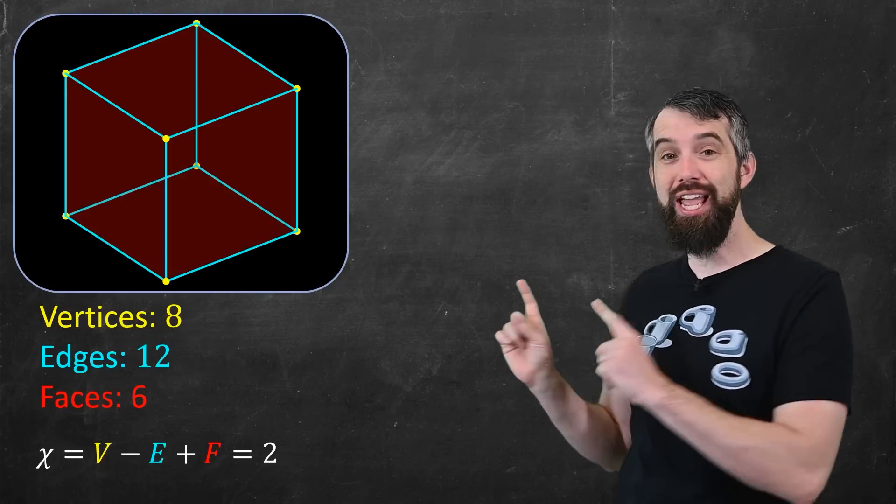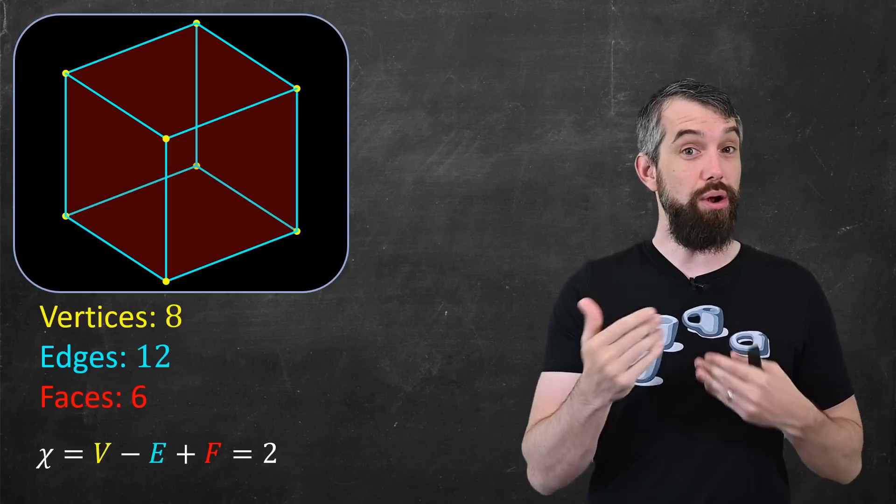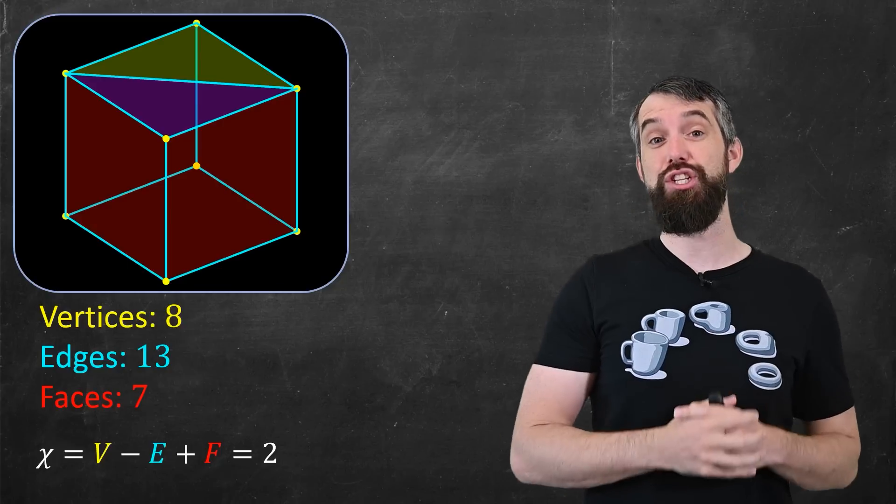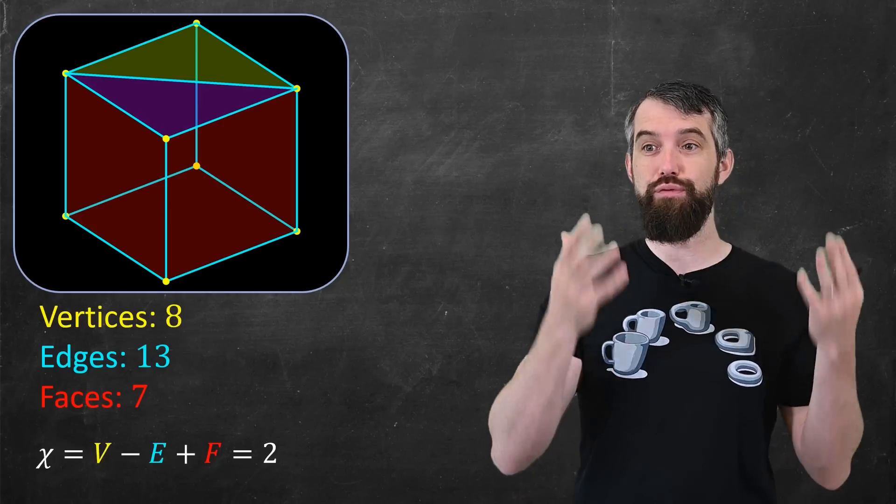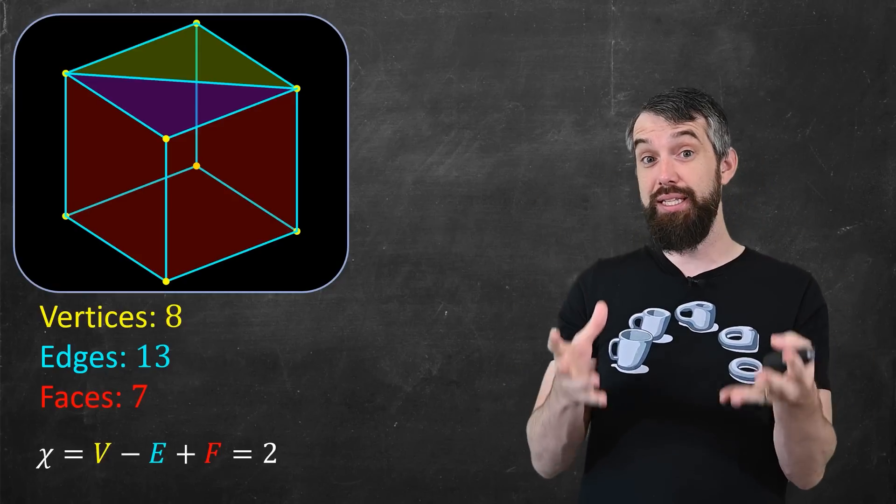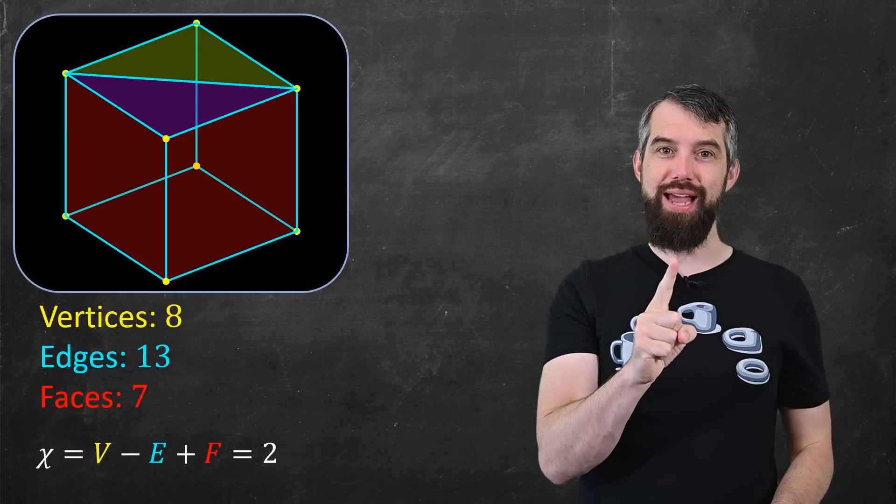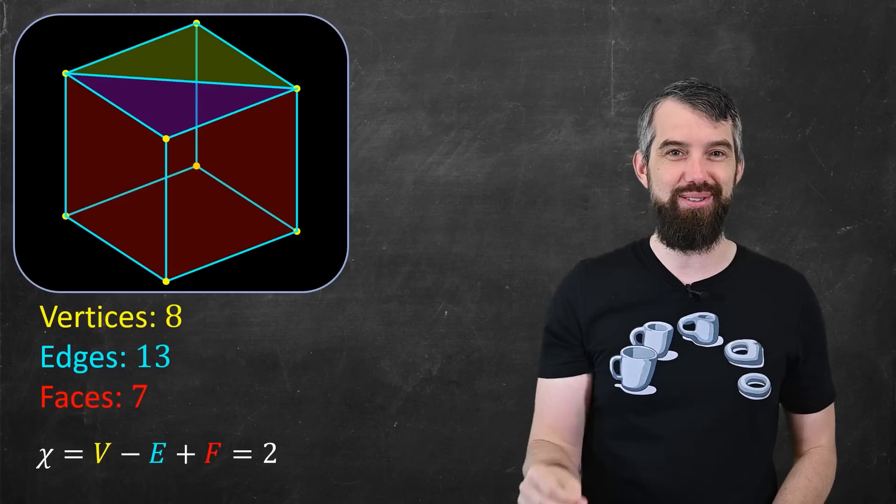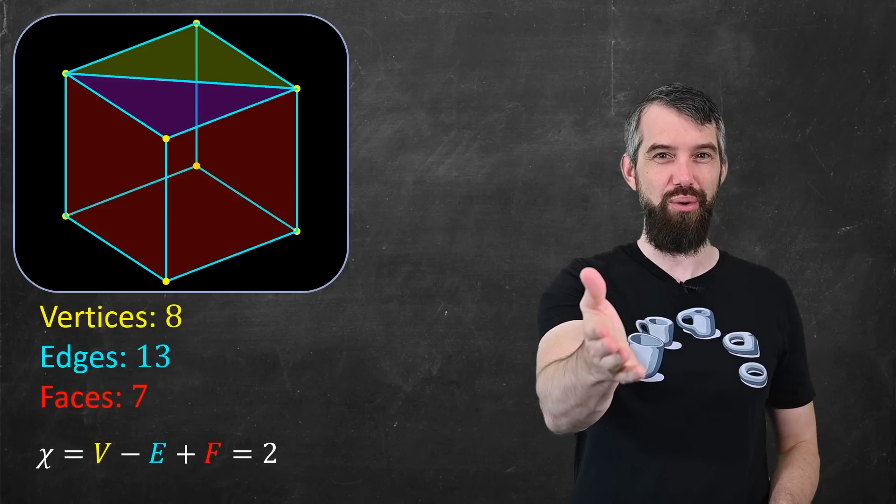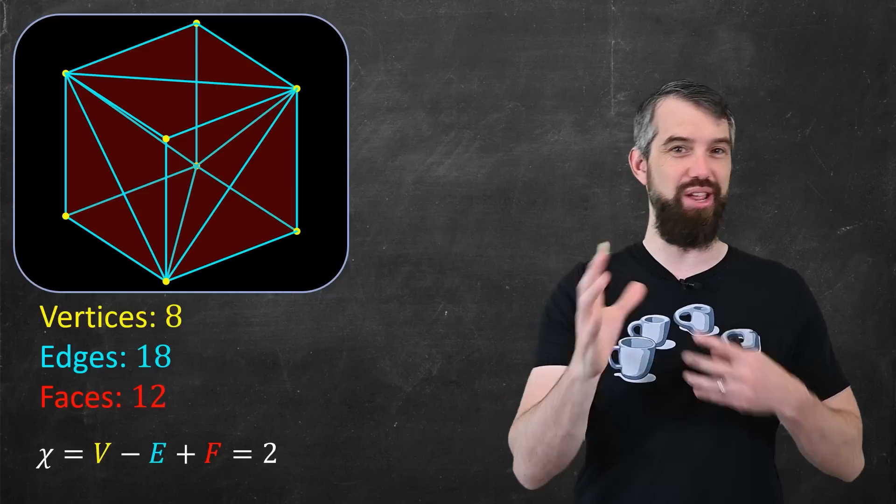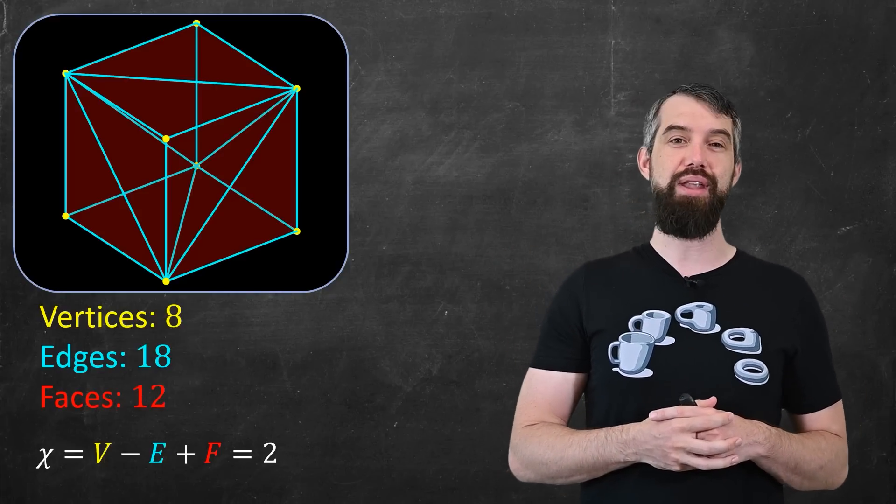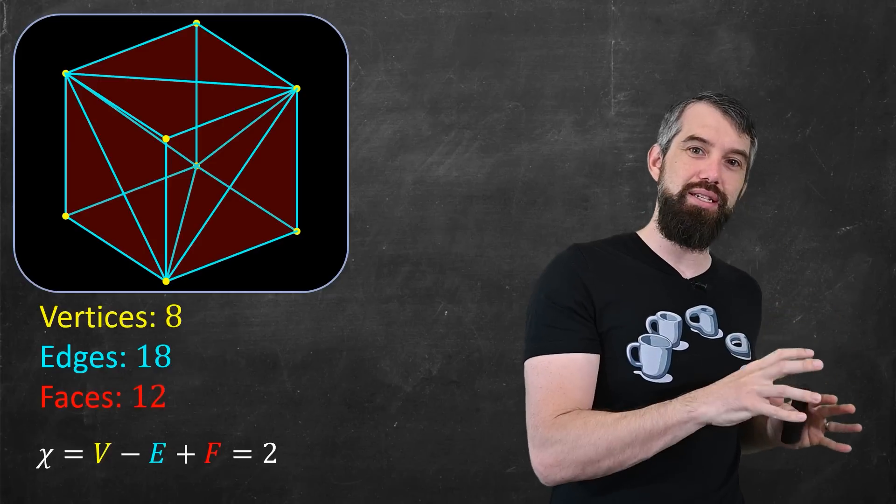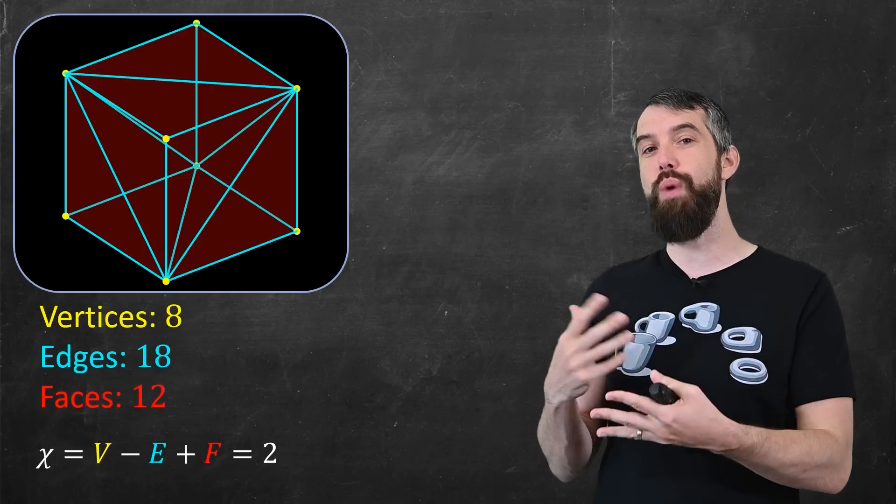But what I really want to illustrate is as I change how I represent this mathematical object, the Euler characteristic is not going to change. For instance, let me suppose I came along the top and put an extra edge in. It's still a cube, it's just my choice of representing it with vertices and edges and faces has changed. The object itself is still a cube. But now I have one more edge, and the top face is being split in two, so I have one more face. But 8 minus 13 plus 7 is also the value of 2. And if I put a whole bunch of different little edges in, I represent in a different way, this one is triangulated. Well now I have 8 minus 18 plus 12, it's also 2. So this invariant is not changing as I change the way I represent this cube.